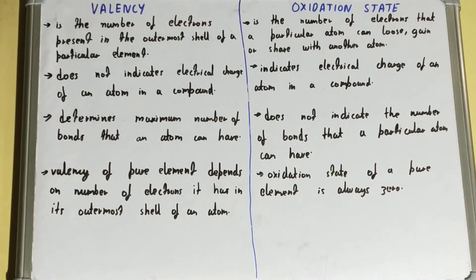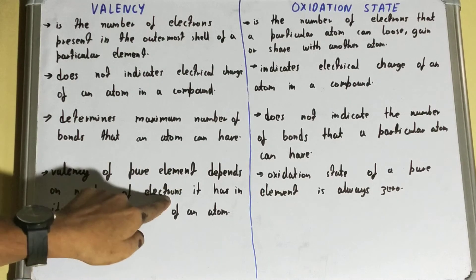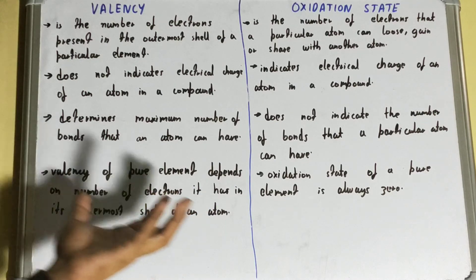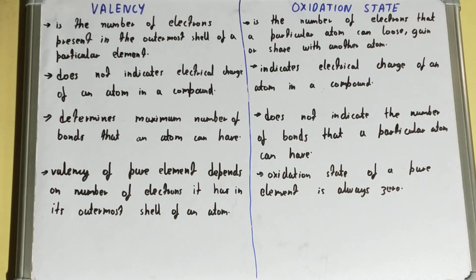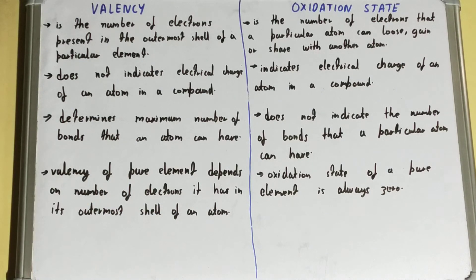For a pure element, valency depends on the number of electrons in its outermost shell, so the valency of an element can never be zero — there will always be electrons present in the outermost shell. However, the oxidation state of a pure element is always zero.